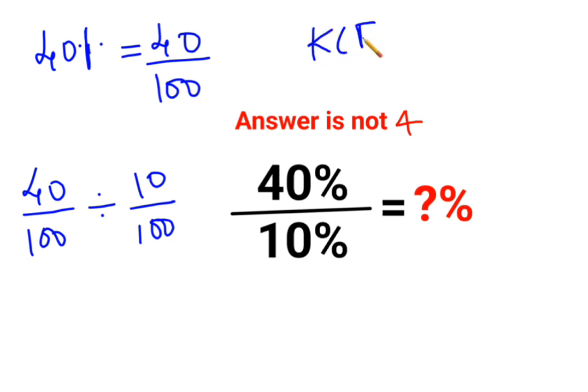Where K stands for keeping the first number as it is, C stands for changing the division sign to multiplication, and F stands for flipping or taking the reciprocal of 10 upon 100 as 100 upon 10.